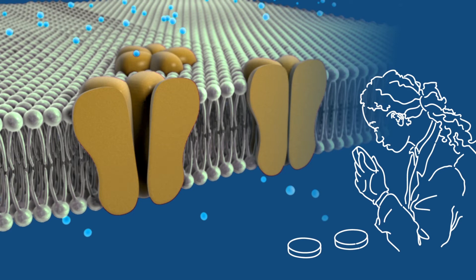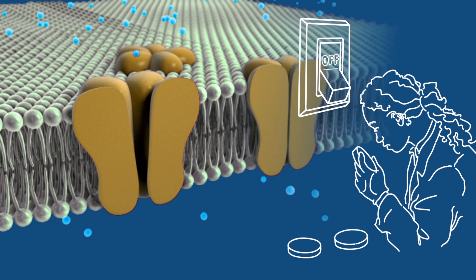Experiments in laboratory dishes demonstrated that light can indeed open these channels and let ions flow in sufficient quantities to excite neurons and turn them on. This discovery piqued the interest of scientists studying the brain.